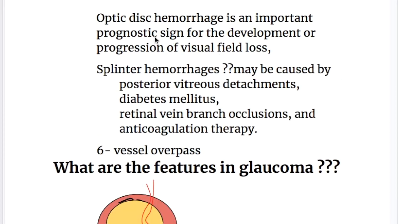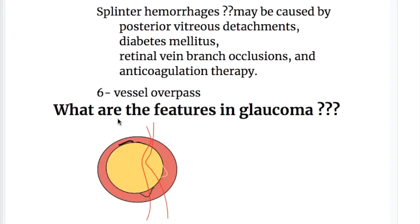Optic disc hemorrhage is an important prognostic sign for the development or progression of visual field loss. What are the causes of splinter hemorrhages? They may be due to posterior vitreous detachment, diabetes, retinal vein branch occlusion, and anticoagulant therapy.